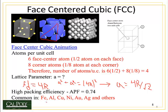What atoms actually form the FCC crystal structure? The most common are iron, aluminum, copper, nickel, gold, silver, and quite a few others. There's one thing all these metals have in common: they're all very ductile metals. The crystal structure has a lot to do with how ductility happens inside a metal.